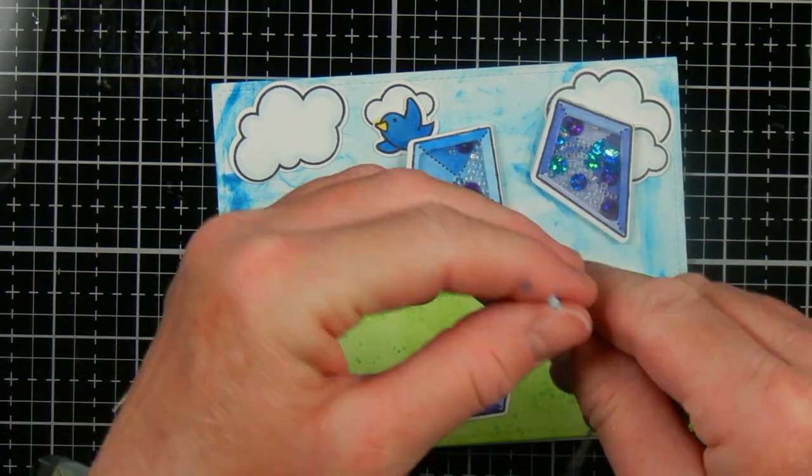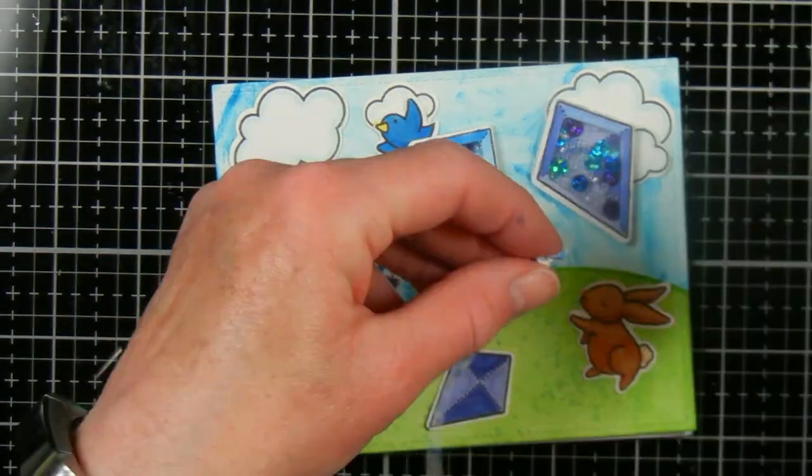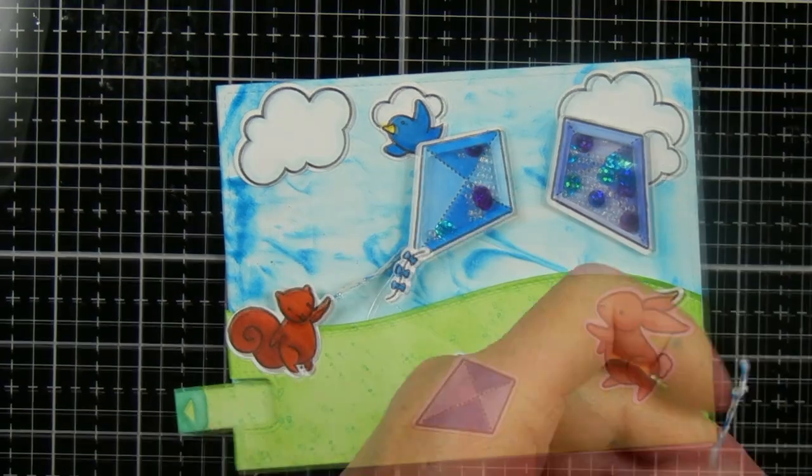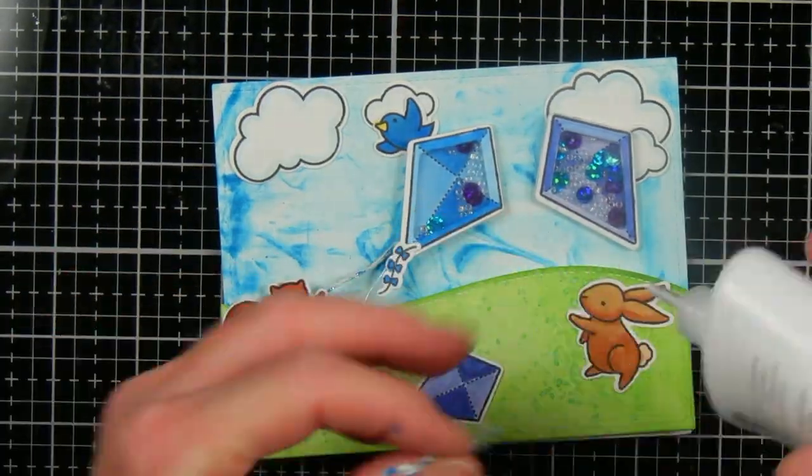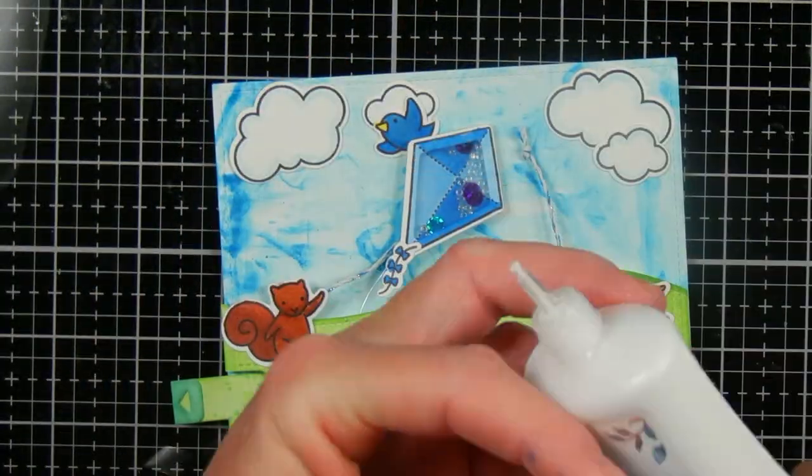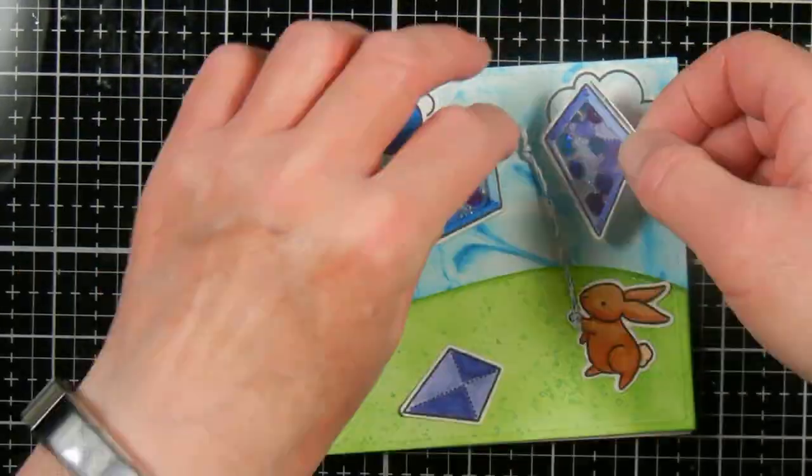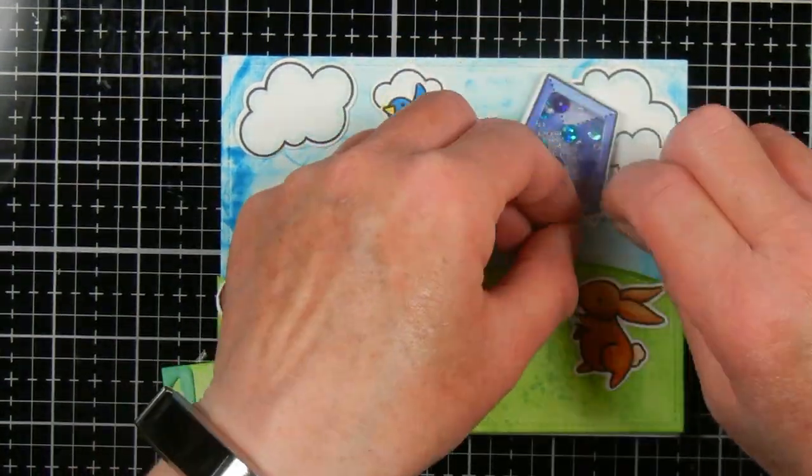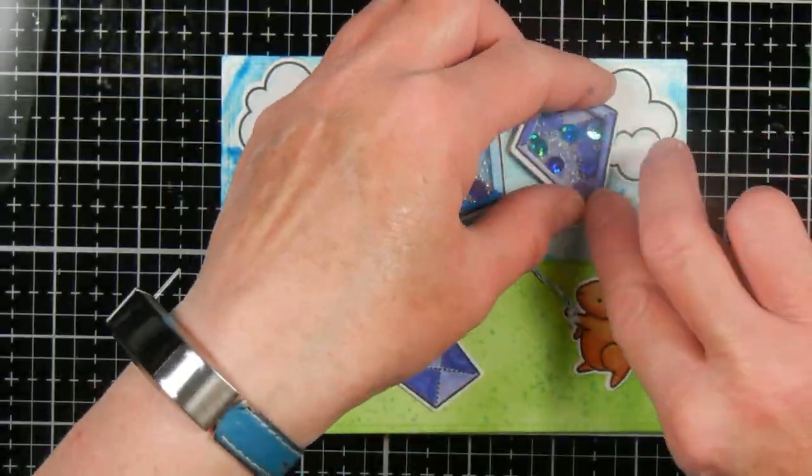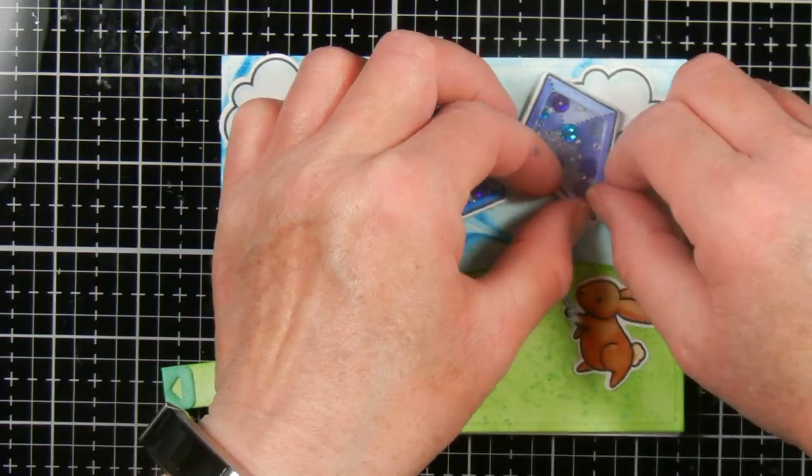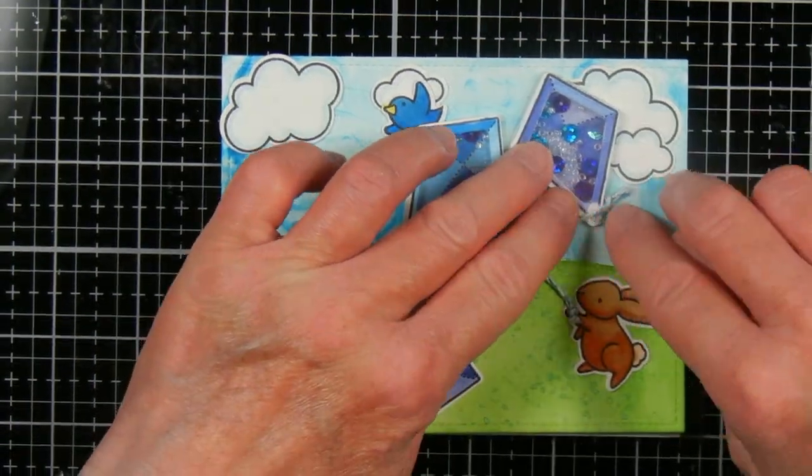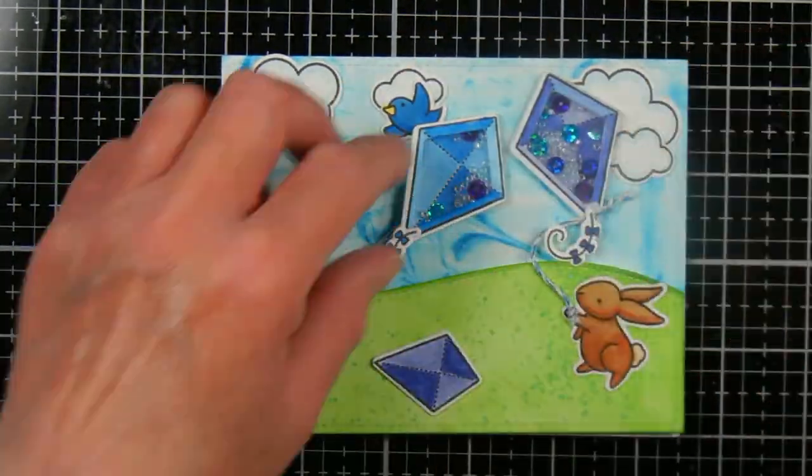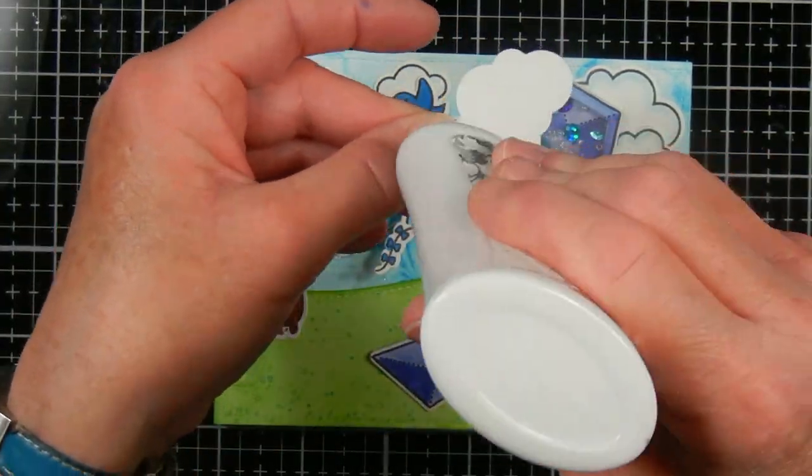These other images are images that I stamped and colored off screen, and now I'm just going to glue them down with some Nuvo Deluxe glue. I just kind of shift things around as I glue. I'll put a list of all the products that I'm using in the description below. Some of these will be affiliate links. They don't cost you anything extra to use, but I do get a small commission from any sales that those links generate, and that helps support my channel.